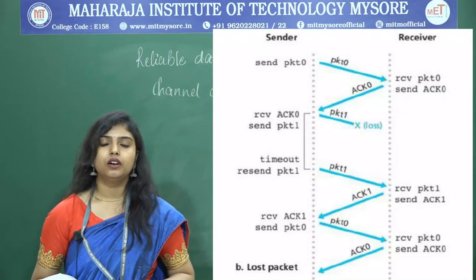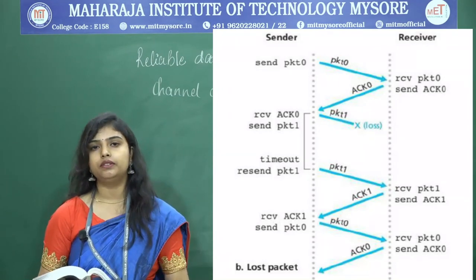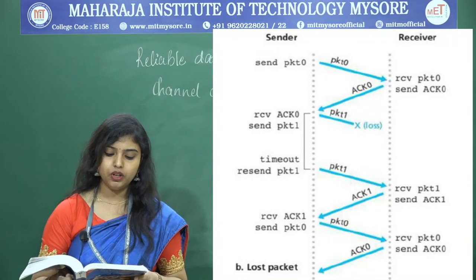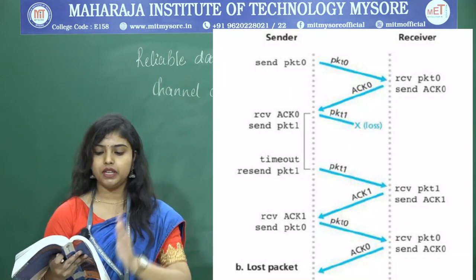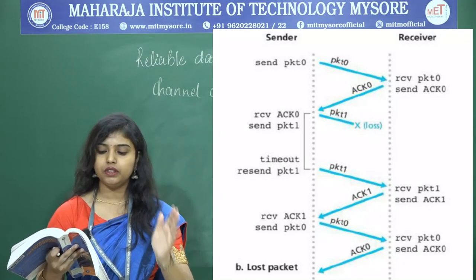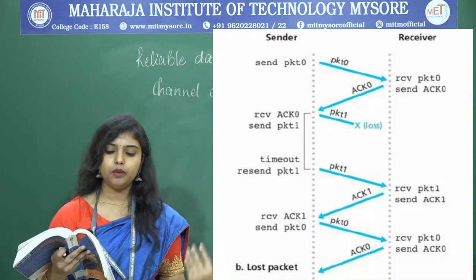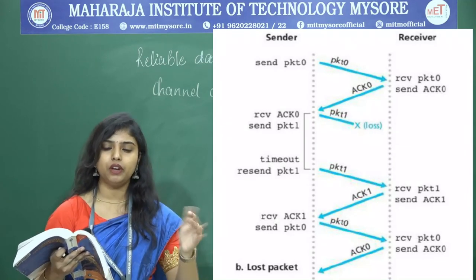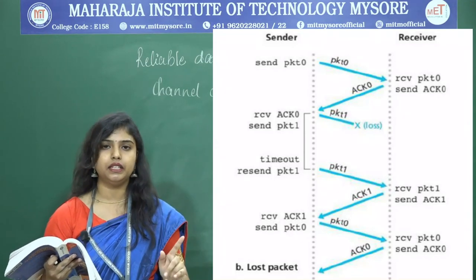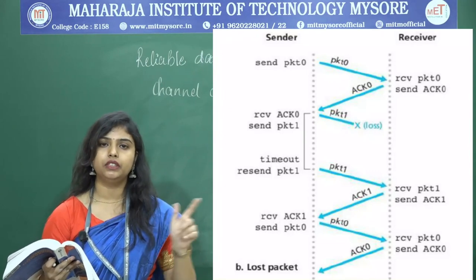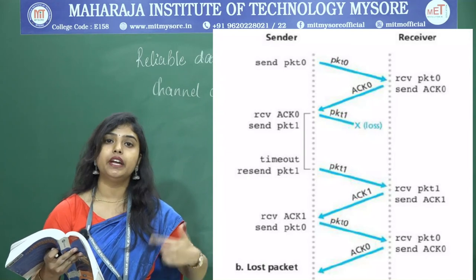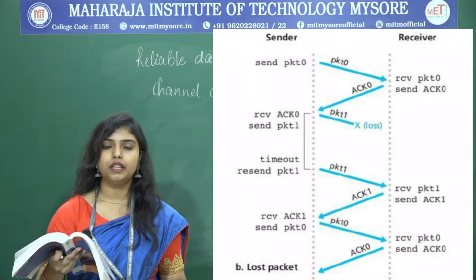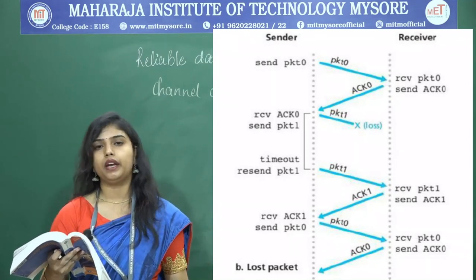Now let us look at the case of packet loss. Here the sender sends packet 0, the receiver receives it and sends a positive acknowledgement. When the sender receives it, it sends packet 1. While travelling from sender to receiver, packet 1 is lost. Since a timer is set for each packet, when the acknowledgement for packet 1 is not received within time, the timeout occurs. When the timeout occurs, the sender retransmits packet 1, and when the receiver receives it, it sends the acknowledgement for packet 1.